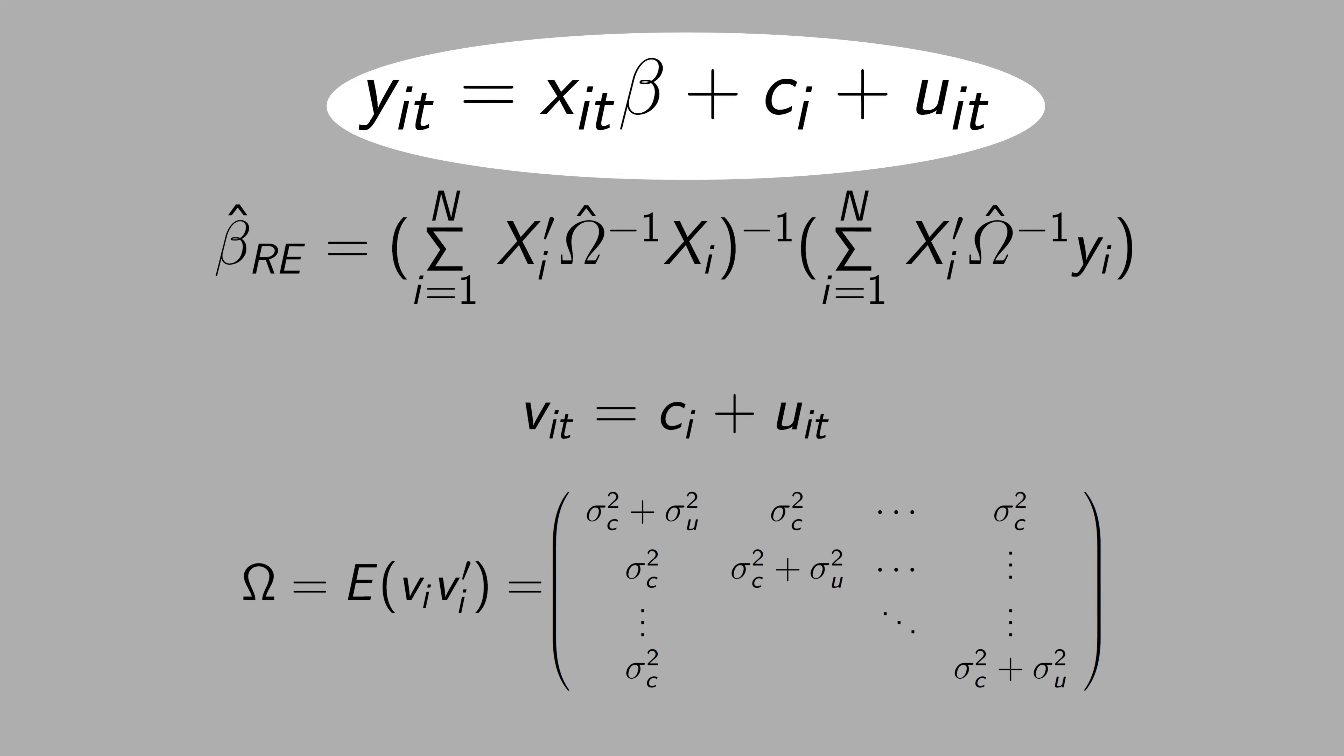The difference between random effect and GLS is that now in the random effect, we are in the context of panel data. Then we have the ci here, that it does not vary over time.